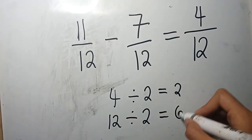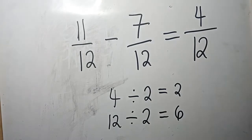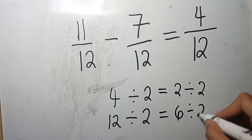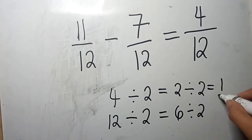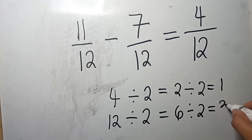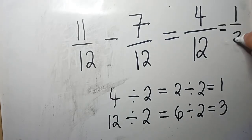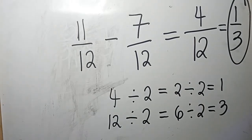2 and 6 can still be simplified — they are still divisible by 2. So we can divide both of them by 2 again. 2 divided by 2 gives us 1, and 6 divided by 2 gives us 3. Now, 1 and 3 are already simplified. Therefore, the simplified form of 4 over 12 is 1 third. Thus, 11 over 12 minus 7 over 12 gives us 1 third.